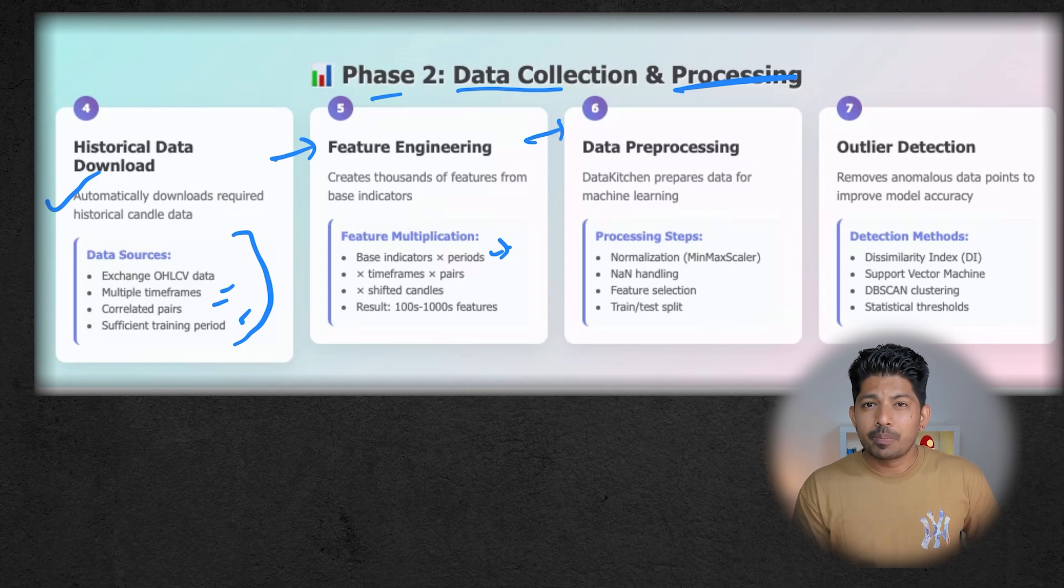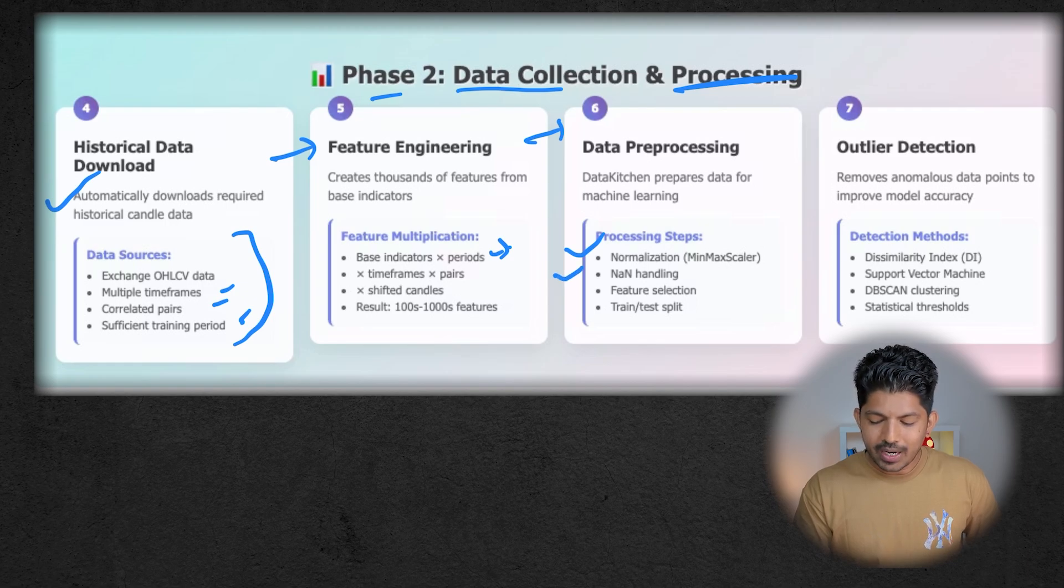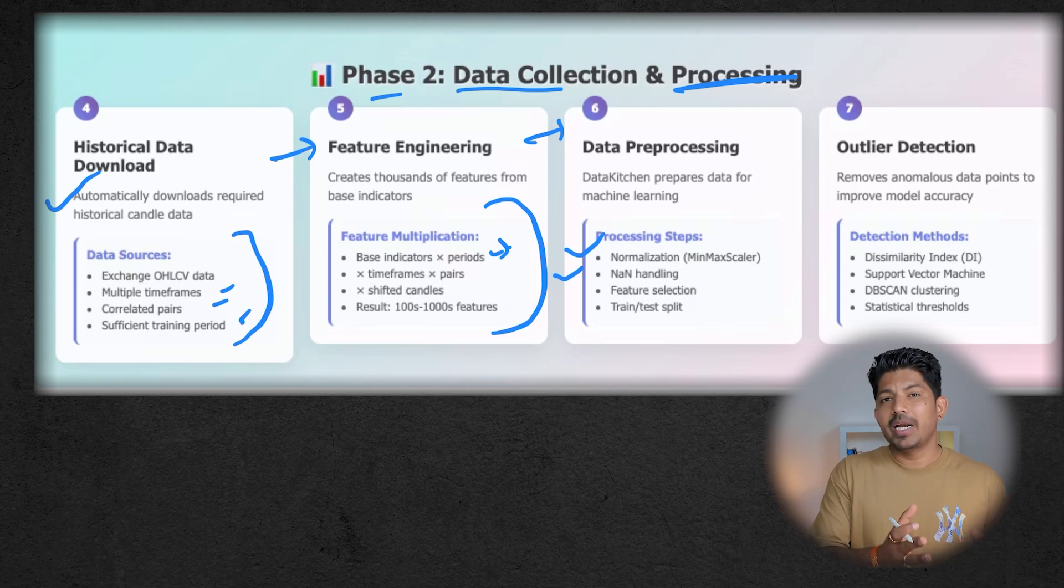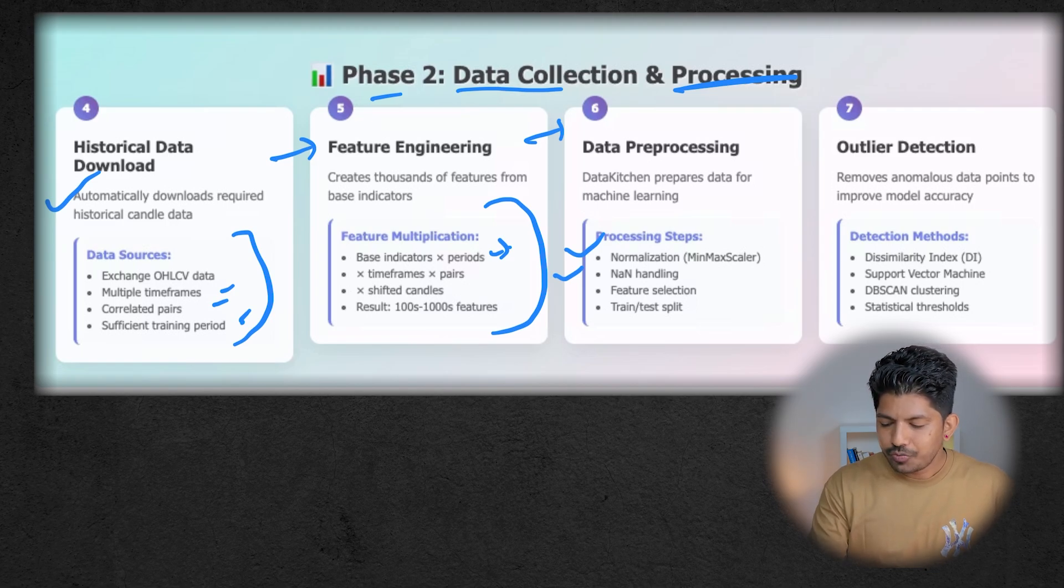Then we have data preprocessing. The data kitchen component prepares data for machine learning. It will normalize data, handle NaN values, then select the features out of these which are good, and then split the data into train and test. It will keep some data for training and then also test the data.